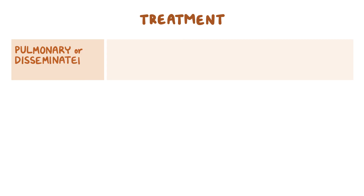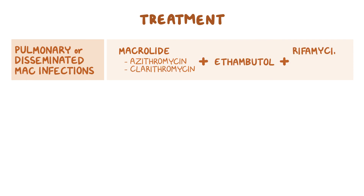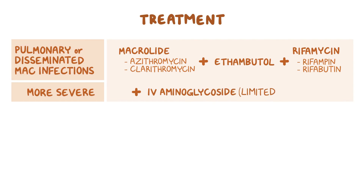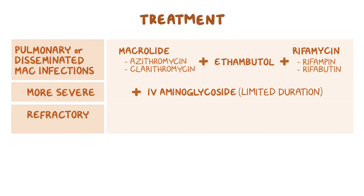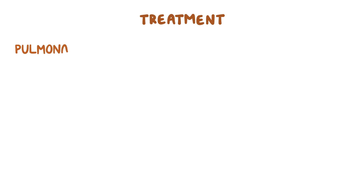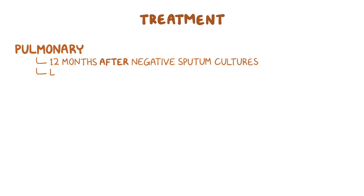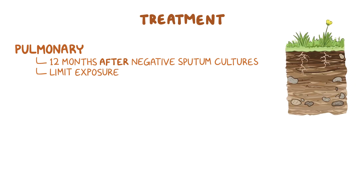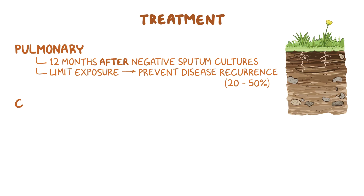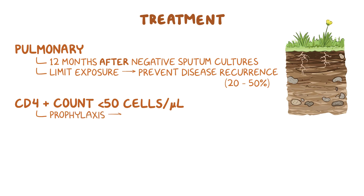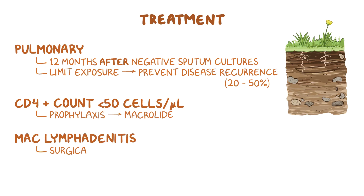For treatment of pulmonary and disseminated MAC infections, a combination of a macrolide such as azithromycin or clarithromycin, plus ethambutol and a rifamycin such as rifampin or rifabutin, is used. In more severe disease, an intravenous aminoglycoside may be used for limited duration. For those with refractory disease or whose organisms have developed macrolide resistance, the addition of inhaled amikacin or clofazimine can also be considered. For pulmonary disease, treatment should be continued for 12 months after establishing negative sputum cultures. Attention should be placed on limiting environmental exposure to MAC from aerosolized water and soil to prevent disease recurrence, which can occur in up to 20–50% of individuals. People with AIDS who have a CD4 count below 50 cells per microliter should receive prophylaxis with a macrolide. Treatment of MAC lymphadenitis is done by surgically excising the affected lymph nodes.